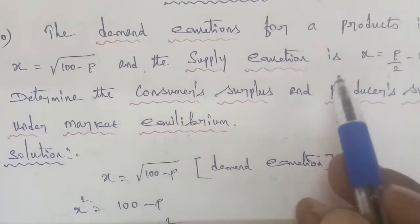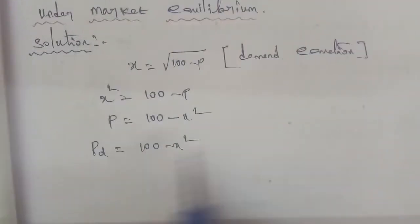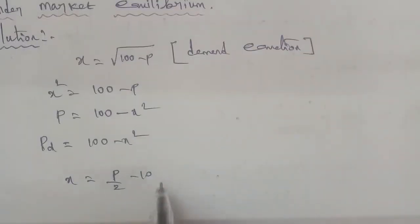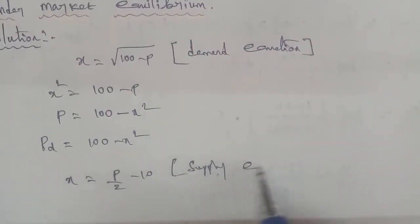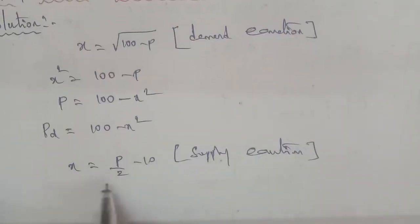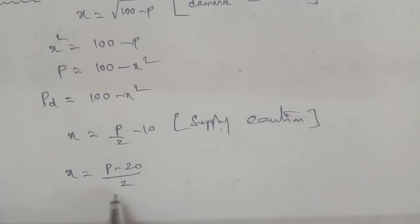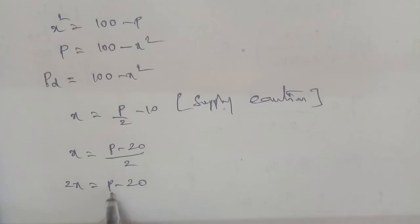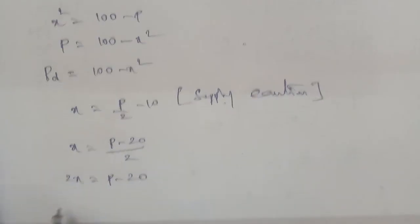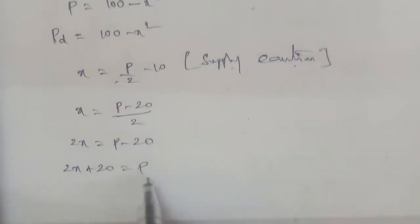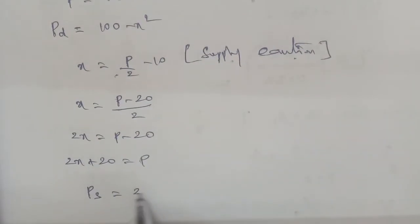Now the supply equation: X is equal to P by 2 minus 10. Rearranging in terms of P: multiply through, so 2X equals P minus 20, therefore P equals 2X plus 20. So the supply equation in terms of P is: Ps equals 2X plus 20.